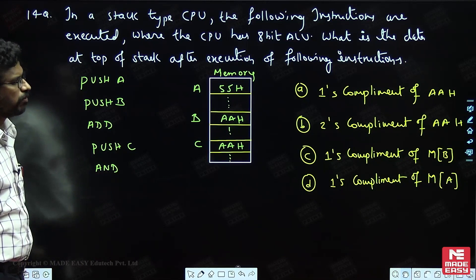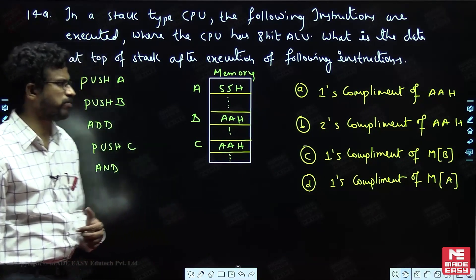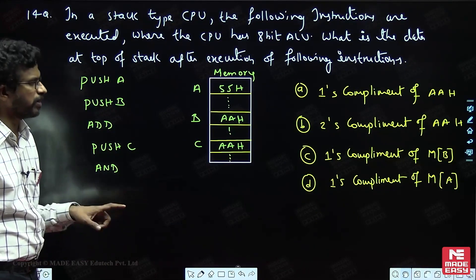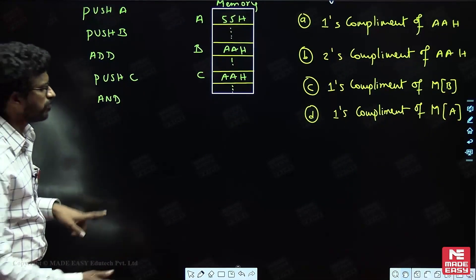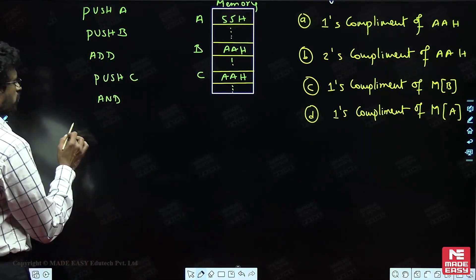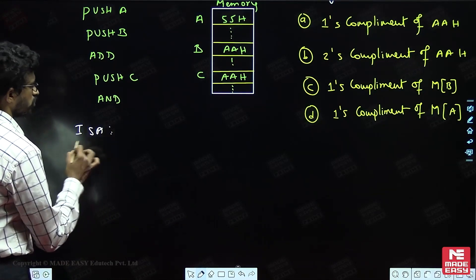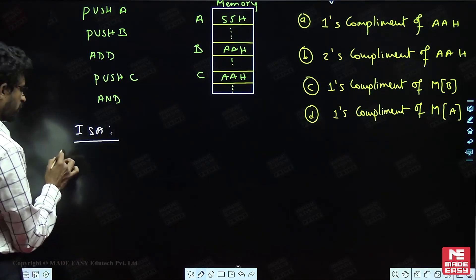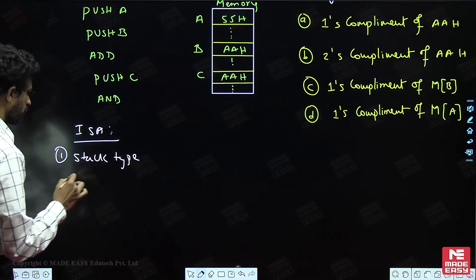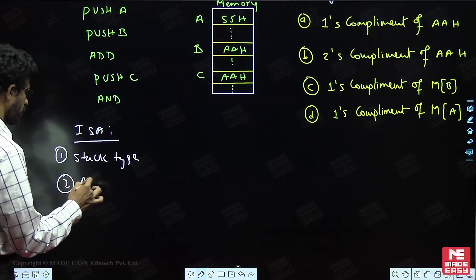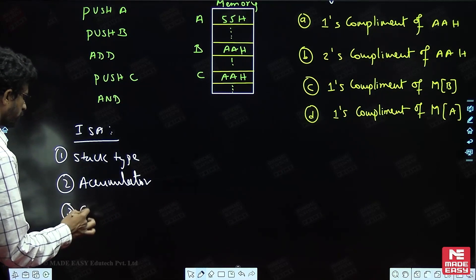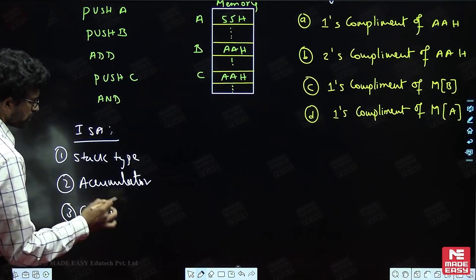First of all, you should know how this stack type of operation is performed. The instruction set architecture can be classified into three basic types: one is called stack type or stack-based, the second is accumulator type, and the third is general purpose register type.